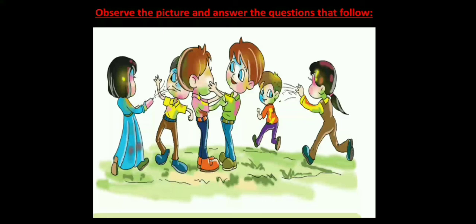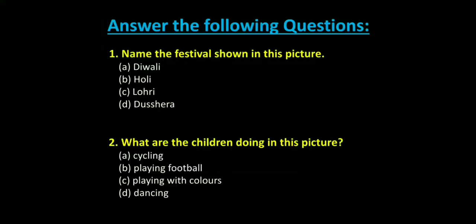As I have already told you to read the questions first, we will read them before looking at the picture. Question 1: Name the festival shown in this picture. Options: 1. Diwali, 2. Holi, 3. Lohri, 4. Dussehra. Question 2: What are the children doing in this picture? Options: 1. Cycling, 2. Playing football, 3. Playing with colors, 4. Dancing. Please note down the questions.